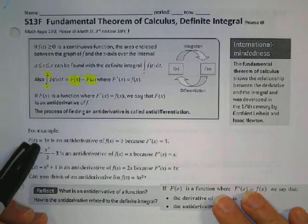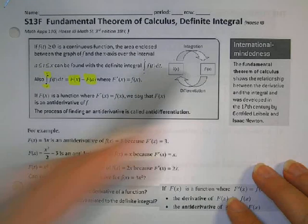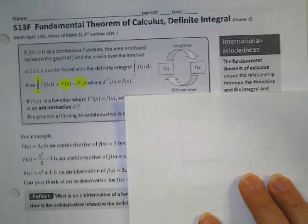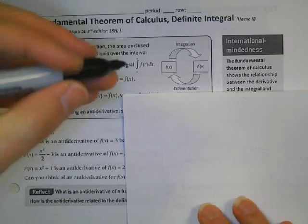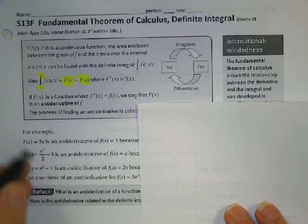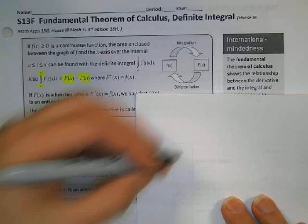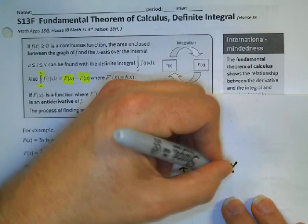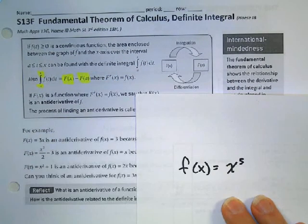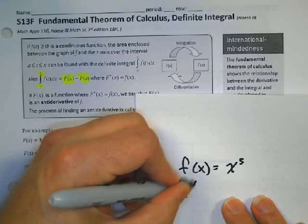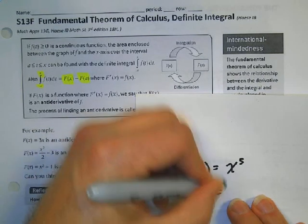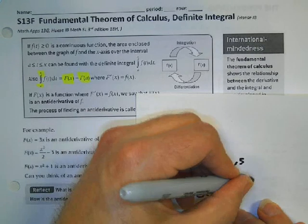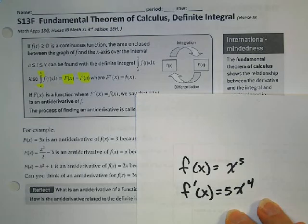First of all, what is an antiderivative? We're going to be doing the derivative backwards. For example, let's pretend we have f of x equals x to the fifth power. You know that the derivative of this — the five gets multiplied to the front coefficient, and then the power decreases by one.